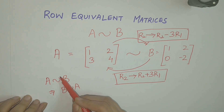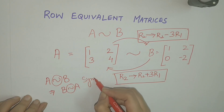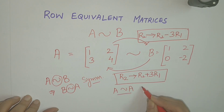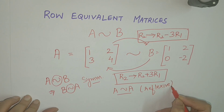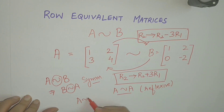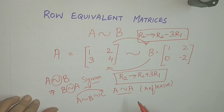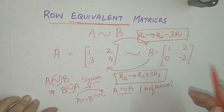So this relation is symmetric. Also, any matrix A is equivalent to itself, so it is reflexive. And if A is equivalent to B and B is equivalent to C, then A and C are also equivalent. Hence, this relation is an equivalence relation.